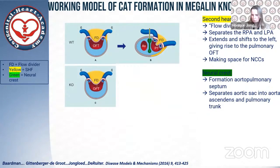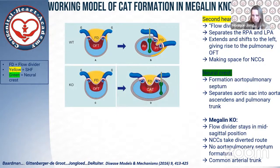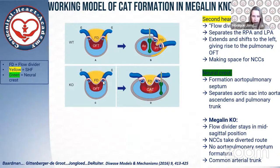The neural crest cells will migrate to the heart to the right of the second heart field, towards the outflow tract cushions, and they will contribute to the aortopulmonary septum. What we saw in the megalin knockout mouse is that this remodeling didn't occur — the flow divider stays in the mid-sagittal position, the remodeling towards the left does not occur, and the neural crest cells must take a diverted route to the heart, resulting in malpositioning of the aortopulmonary septum and thus resulting in a common arterial trunk.